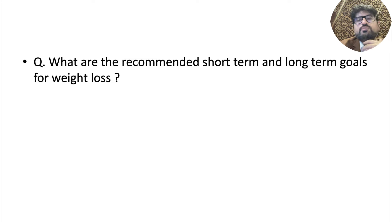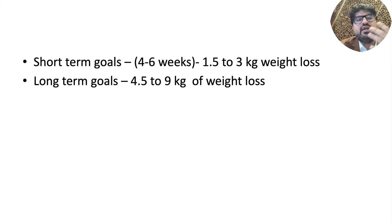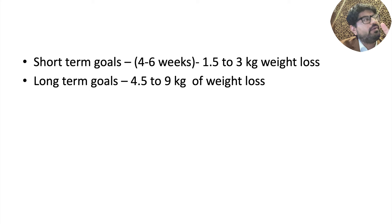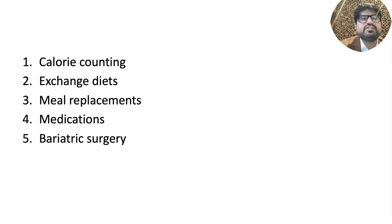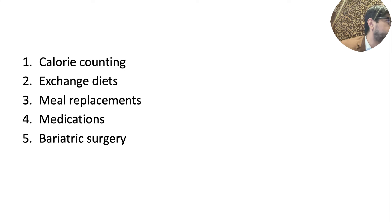For short-term goals, try to lose about 1.5 to 3 kgs over 3 months. For long-term goals, aim for 4.5 to 9 kgs - typically 10% of body weight. Strategies include calorie counting, exchange diets, meal replacements, medications, and bariatric surgery. Even bariatric surgery has been shown to produce diabetes remission. The key point is that whatever the baseline weight, losing that visceral fat - even in thin-looking Indian patients - significantly improves diabetes.